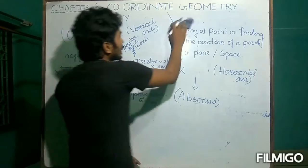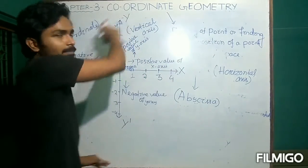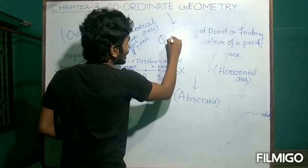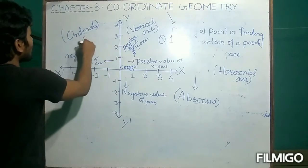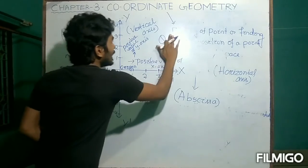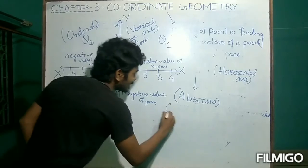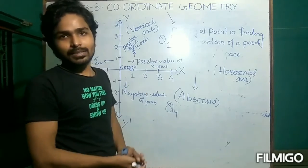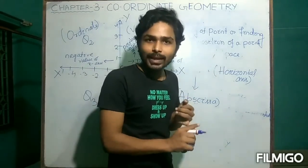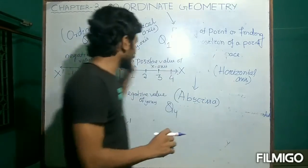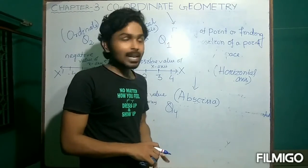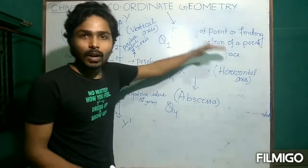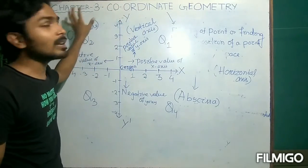This coordinate system is divided into four parts called quadrants. The first part is quadrant 1, the second is quadrant 2, this is quadrant 3, and this is quadrant 4. The system I have drawn is the Cartesian coordinate system, where we have four quadrants (Q1, Q2, Q3, Q4), two axes — x and y — where x-axis is the horizontal axis or abscissa, and y-axis is the vertical axis or ordinate.